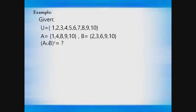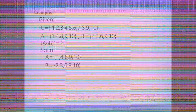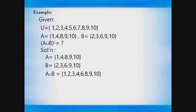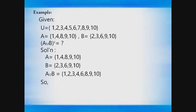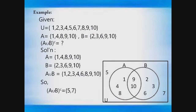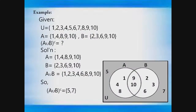Let us have another example using the same given sets, but now find the complement of A union B. The elements of set A are 1, 4, 8, 9, 10, and the elements of set B are 2, 3, 6, 9, 10. The union of both sets, taking all elements without repeating, is {1, 2, 3, 4, 6, 8, 9, 10}. Since the complement is the elements in the universal set that do not belong to the given set, the complement of A union B is {5, 7}. Now let's plot it on a Venn diagram. This is the answer for the complement of A union B.